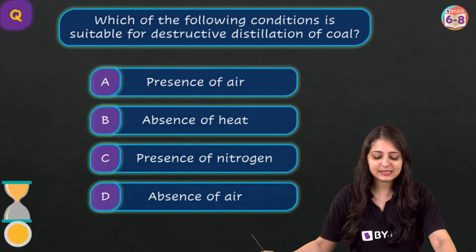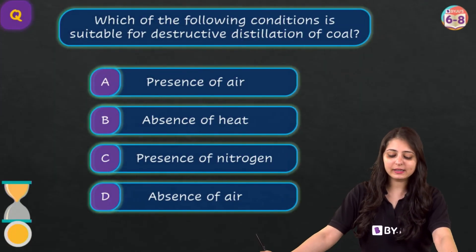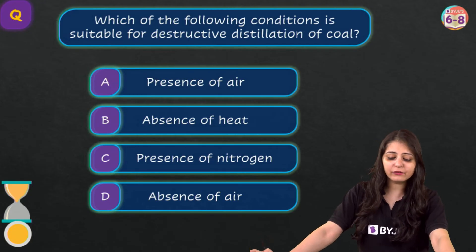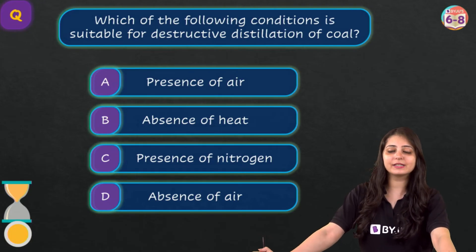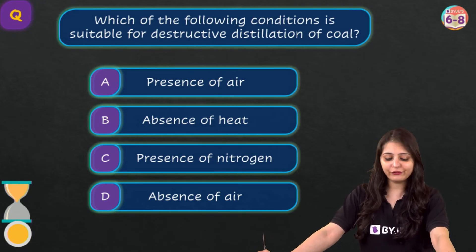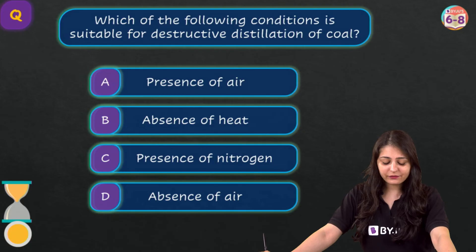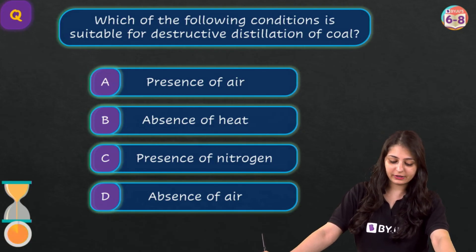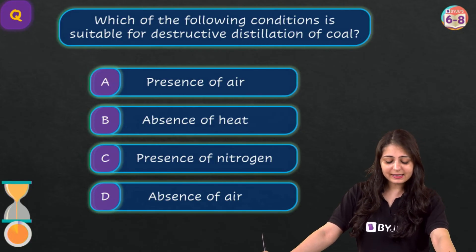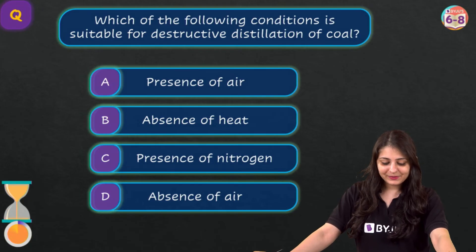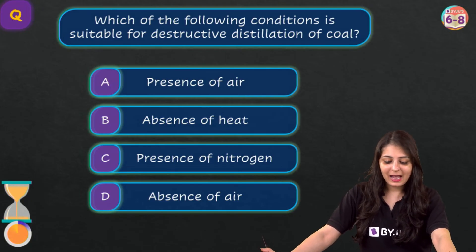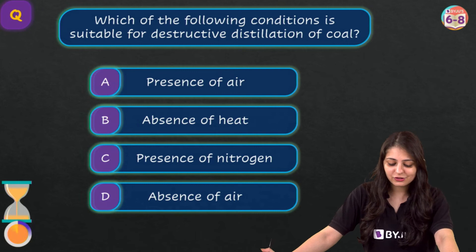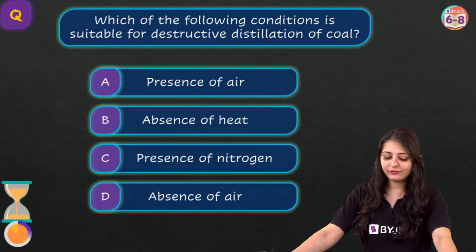Moving on to the next question: Which of the following conditions is suitable for destructive distillation of coal? Options: presence of air, absence of heat, presence of nitrogen, or absence of air. Read all the options carefully — presence of air, absence of heat, presence of nitrogen, absence of air.